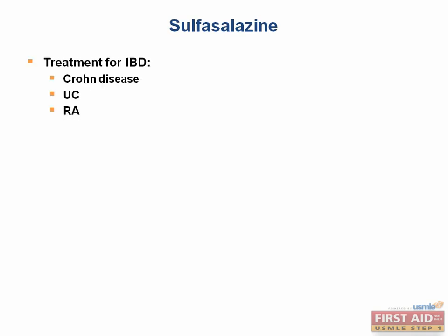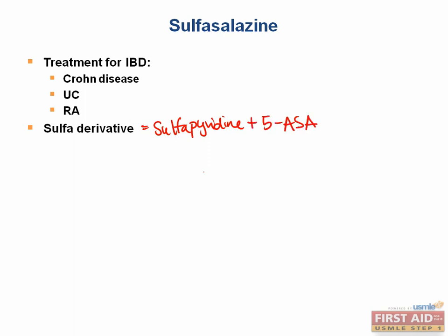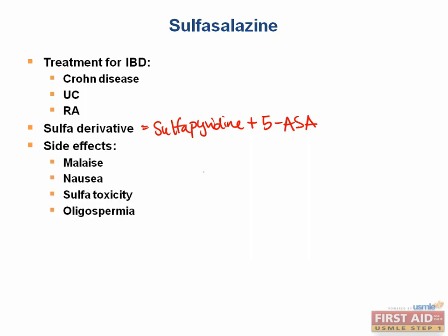Next, let's talk about sulfasalazine. Sulfasalazine can be used in Crohn's disease, ulcerative colitis, and rheumatoid arthritis, similar to infliximab. It is a combination of sulfapyridine, which has an antibacterial effect, and 5-ASA, which is anti-inflammatory. It is activated in the GI tract by colonic bacteria and provides some topical anti-inflammatory relief. Side effects of sulfasalazine include malaise, nausea, sulfa toxicity, and oligospermia that is reversible.